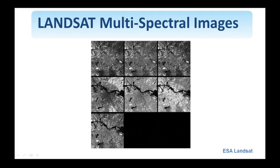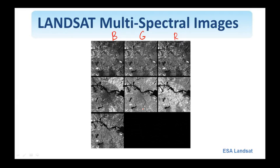We show here the seven bands of a Landsat multispectral image, which was shown earlier in the introduction of the course. These include the blue, green, and red bands, and four infrared bands. This is a Landsat image of the city of Amsterdam. Instead of looking at the bands one at a time in a grayscale fashion, we can combine the bands and produce color images.